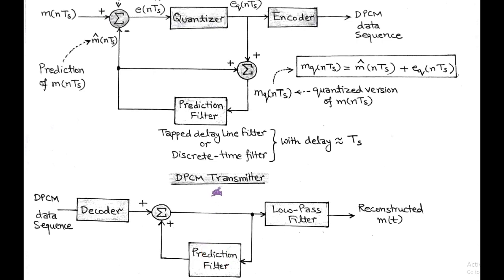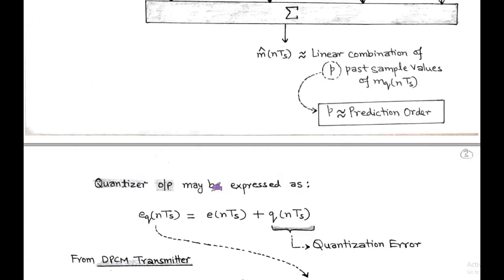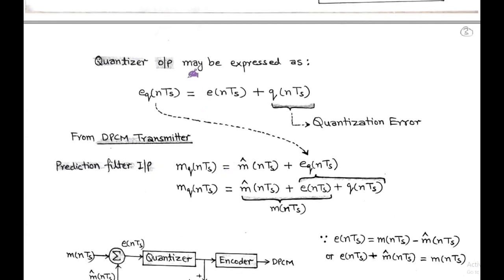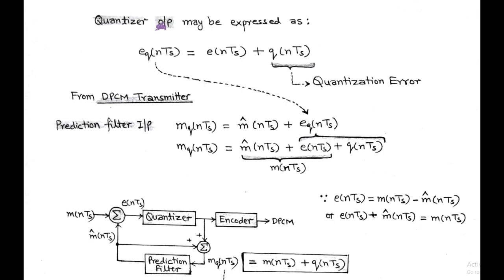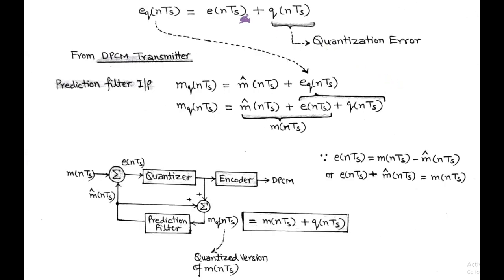Now we discuss differential PCM briefly using mathematical equations. Consider the quantizer output: E_Q(NTS) equals E(NTS) plus Q(NTS). Here, E is called the prediction error and Q is called the quantization error, and their combination is called the quantized version of the prediction error.